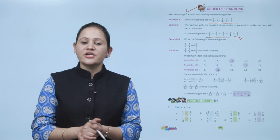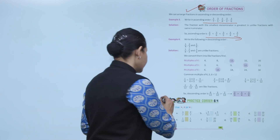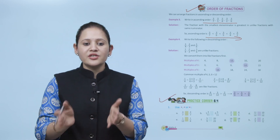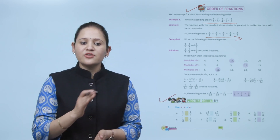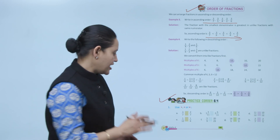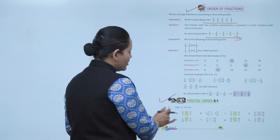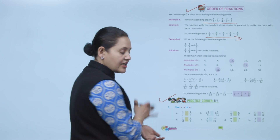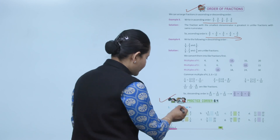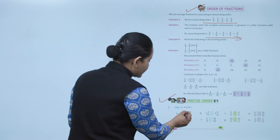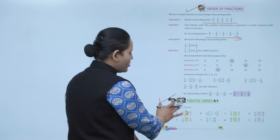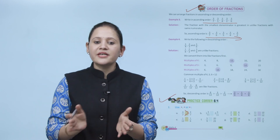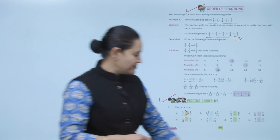Practice corner 8.4: use greater than, less than, or equals to — 3 by 7 and 2 by 7. These are like fractions, so the fraction with the greater numerator is greater. Therefore 3 by 7 is more than 2 by 7. Practice all the questions of this exercise.